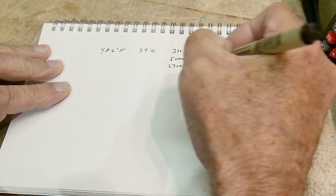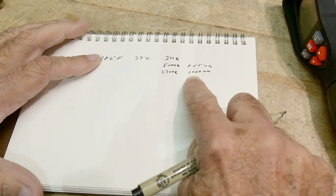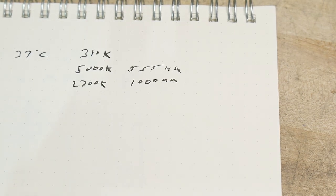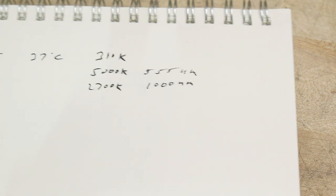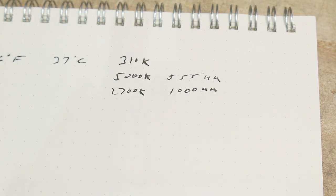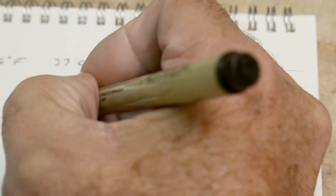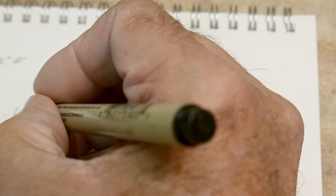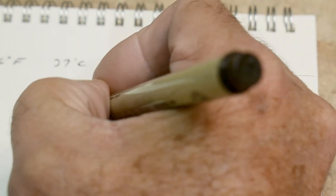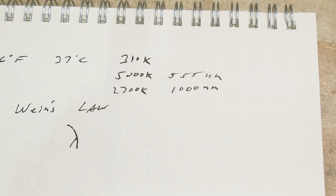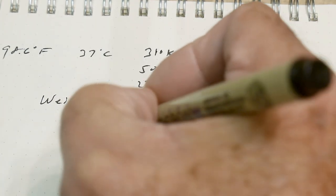There's a simple formula called Wien's Law. I might have the I and E backwards, but Wien's Law says that the peak wavelength is equal to some constant divided by its temperature. The constant is 2.898 micrometers Kelvin.